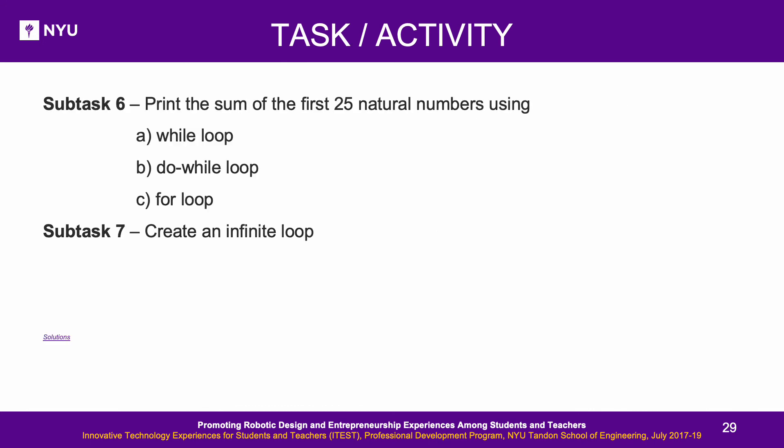Subtask 5: Write a program to blink the internal LED 10 times with time delays between blinks increasing by 1 second after every blink. Subtask 6: Print the sum of the first 25 natural numbers using (A) a while loop, (B) a do-while loop, and (C) a for loop. Subtask 7: Create an infinite loop. For solutions to these tasks, click on Solutions.